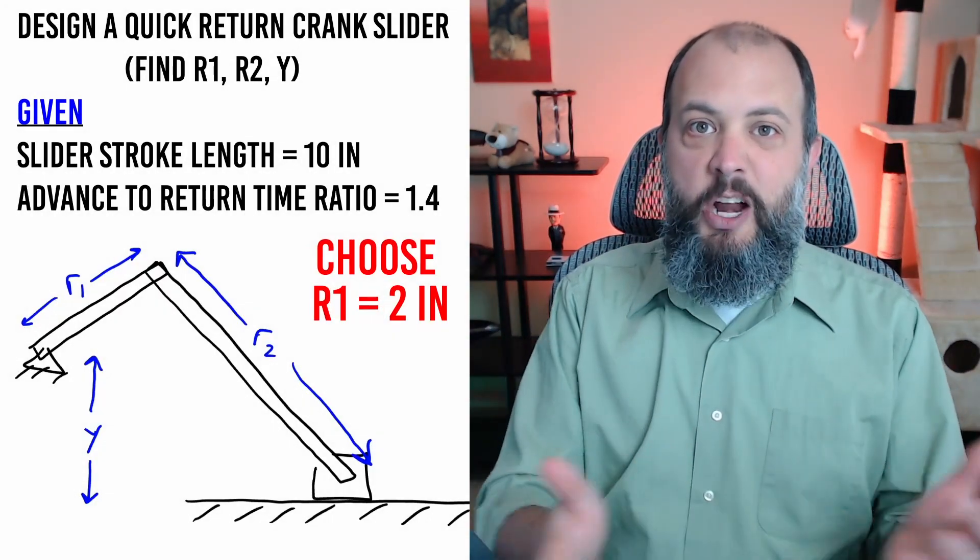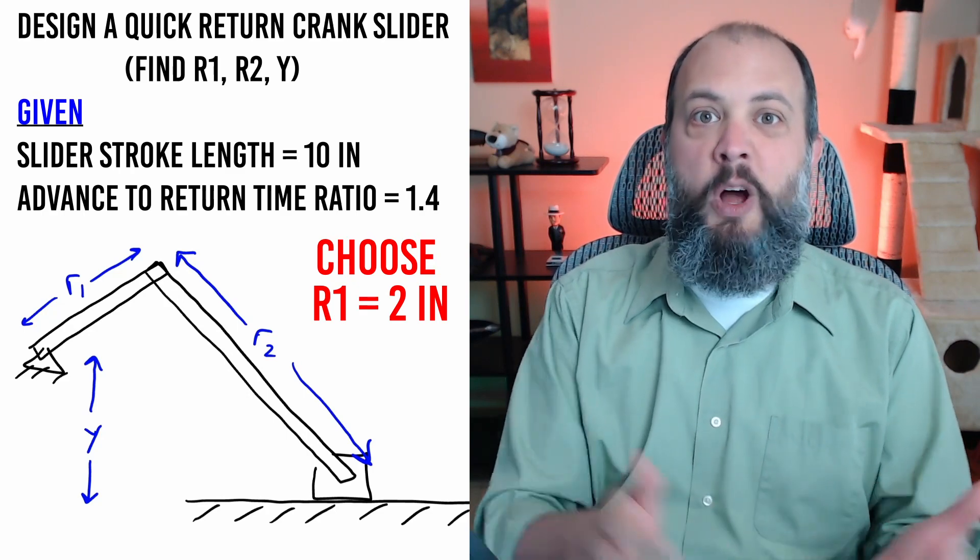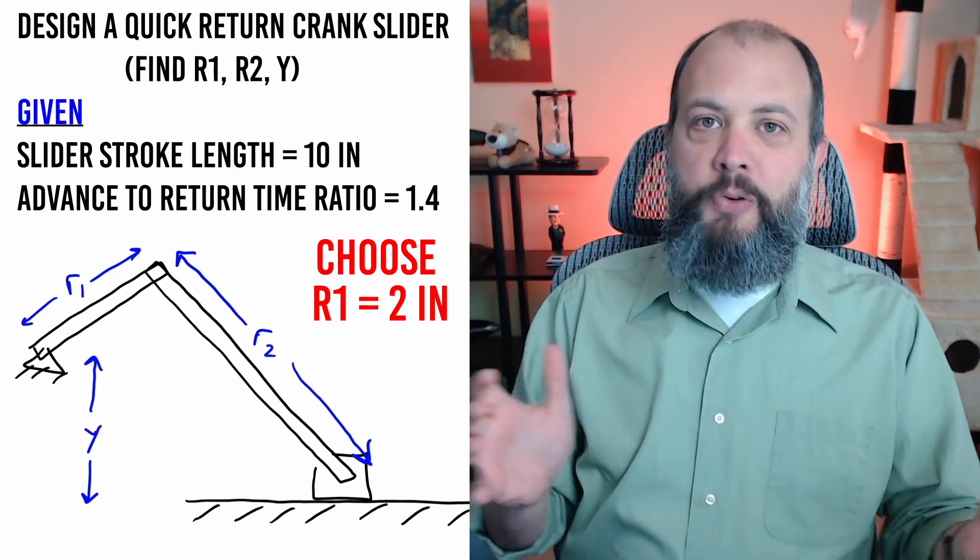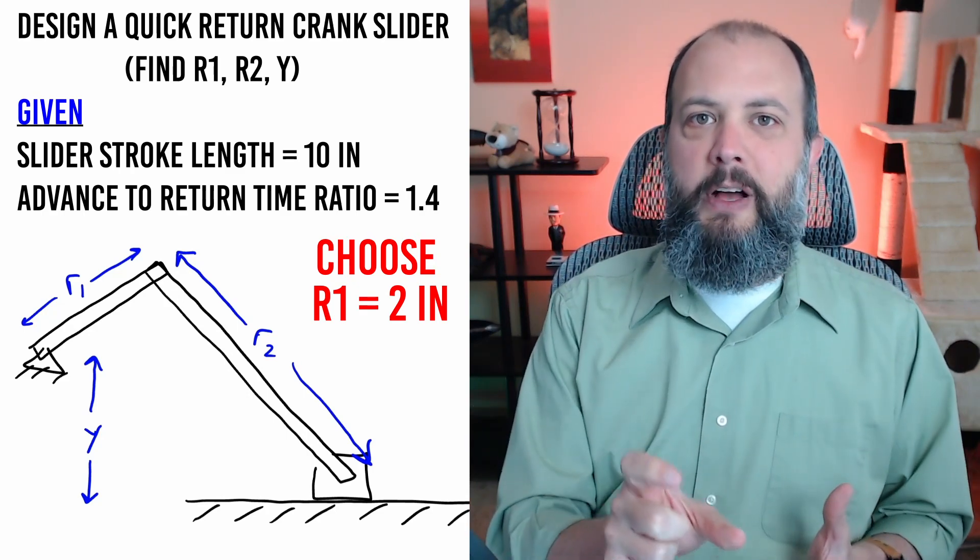You can actually choose any number you want for any of the three quantities. So for me I'm arbitrarily going to choose a crank length of 2 inches but later on in this video I'll show an alternative what would have happened if I had chosen a different length for this value.